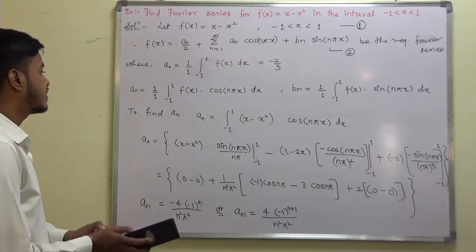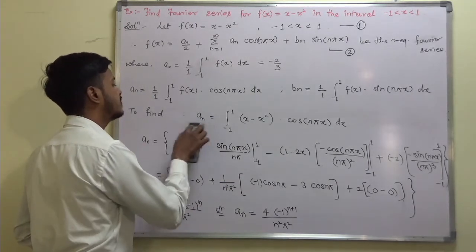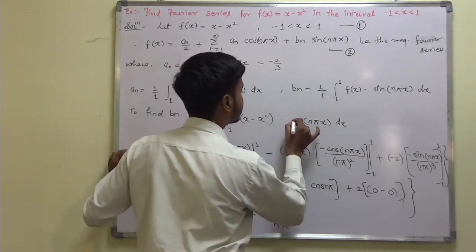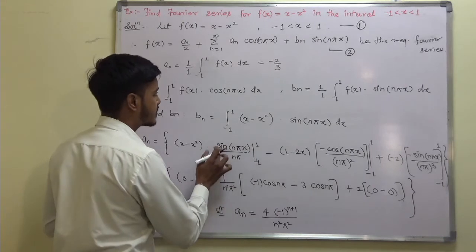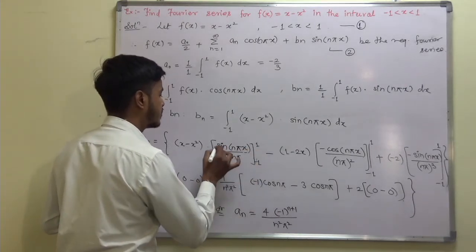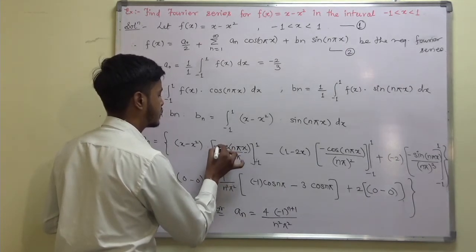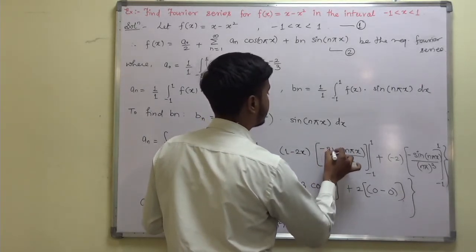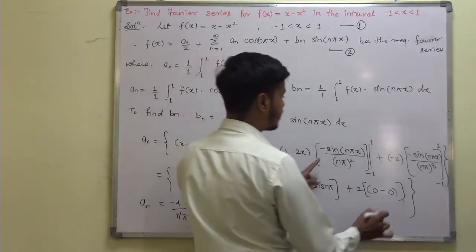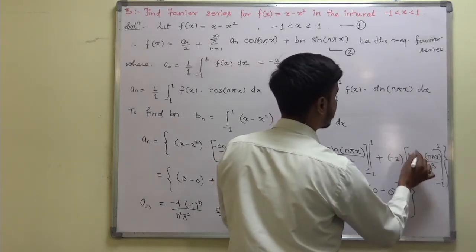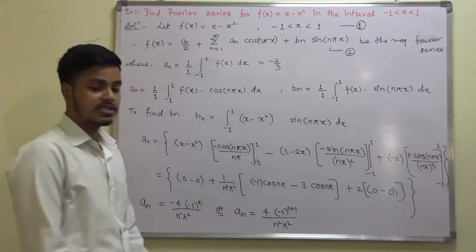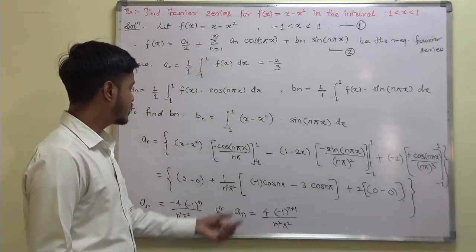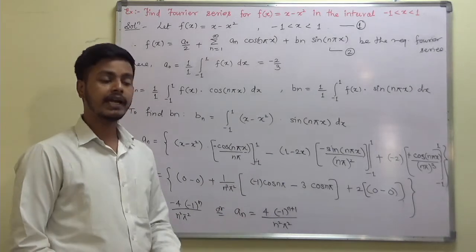Now find bₙ. bₙ = ∫₋₁¹ (x − x²) sin(nπx) dx. Apply integration by parts: integration of sin gives −cos(nπx)/(nπ), so the first term uses −cos. I want you to pause the video for a minute, apply the limits yourself to get bₙ, and then resume.